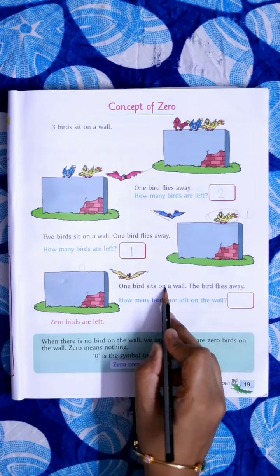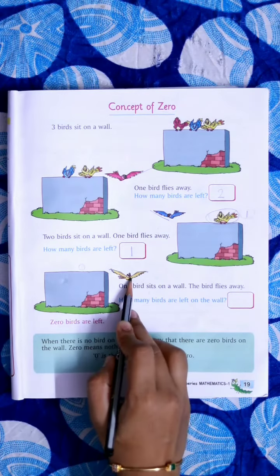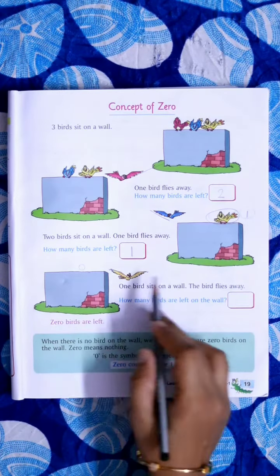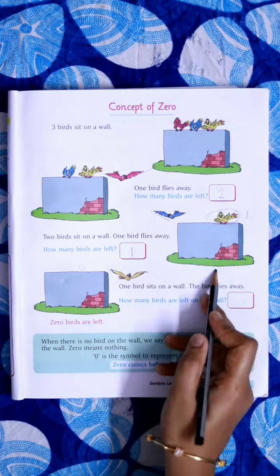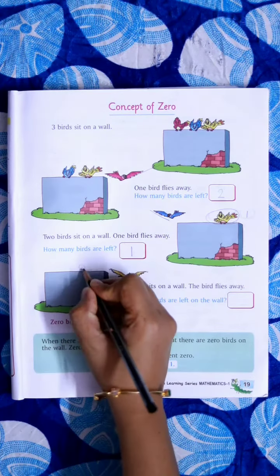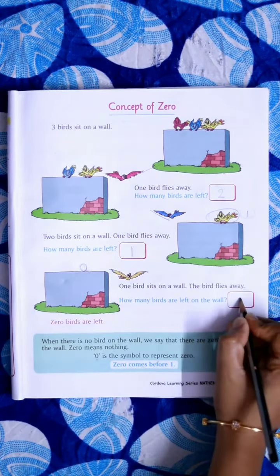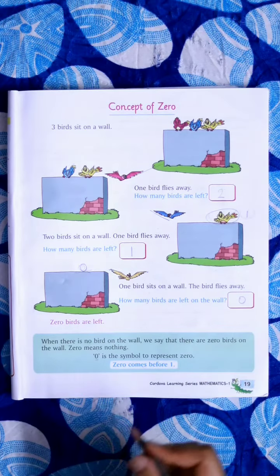One bird sit on a wall and that bird flies away. So the number left will be zero. So we have to write zero here.